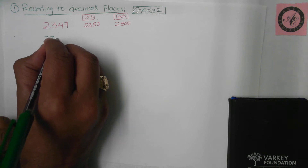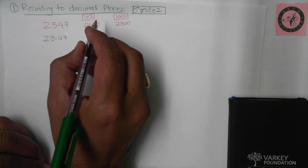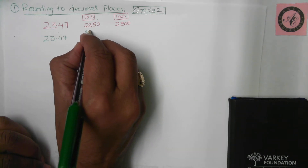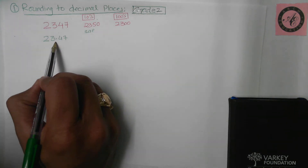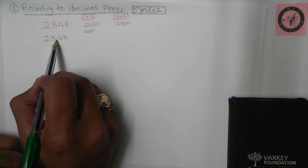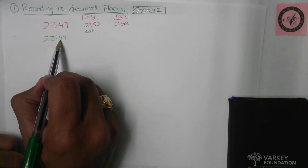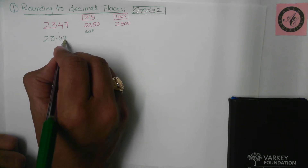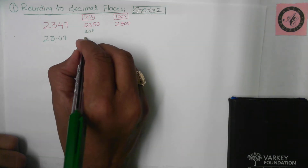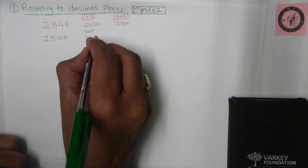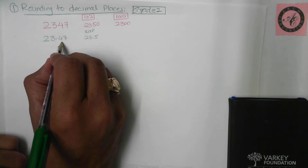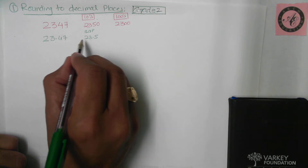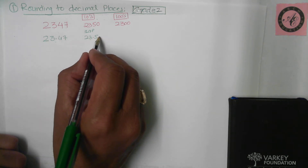What happens when this number has a decimal point? Nothing changes. If I ask you to round to one decimal place, that means you're looking at the digits after the decimal — that's where we want to finish the number. The next digit is seven, so four rounds up to five: the answer is 23.5. You write only up to that point, because a zero at the end after the decimal makes no difference.